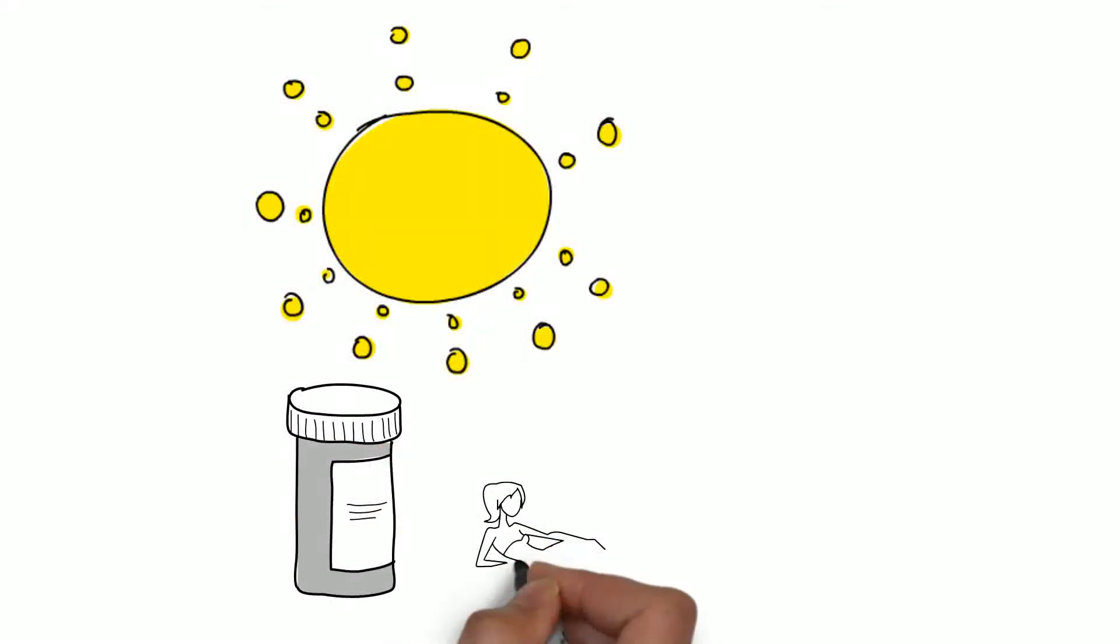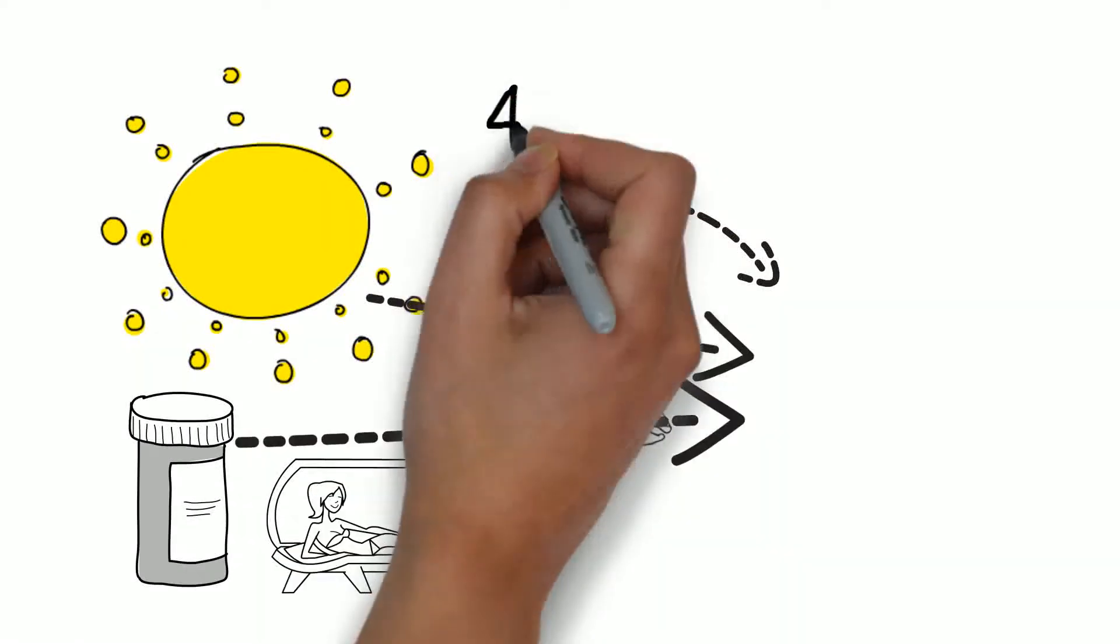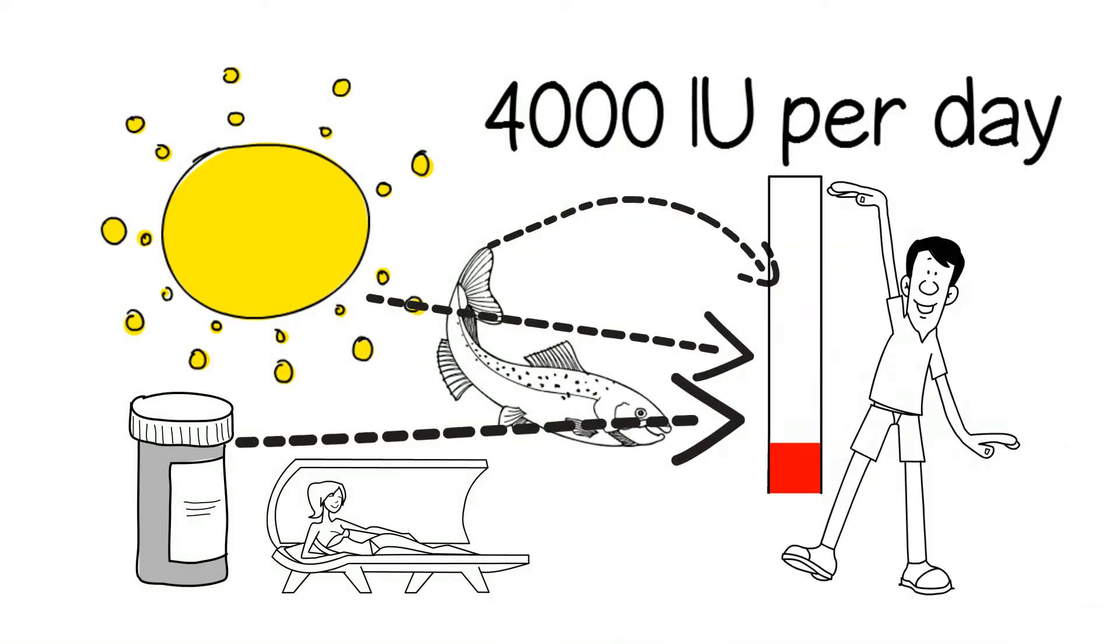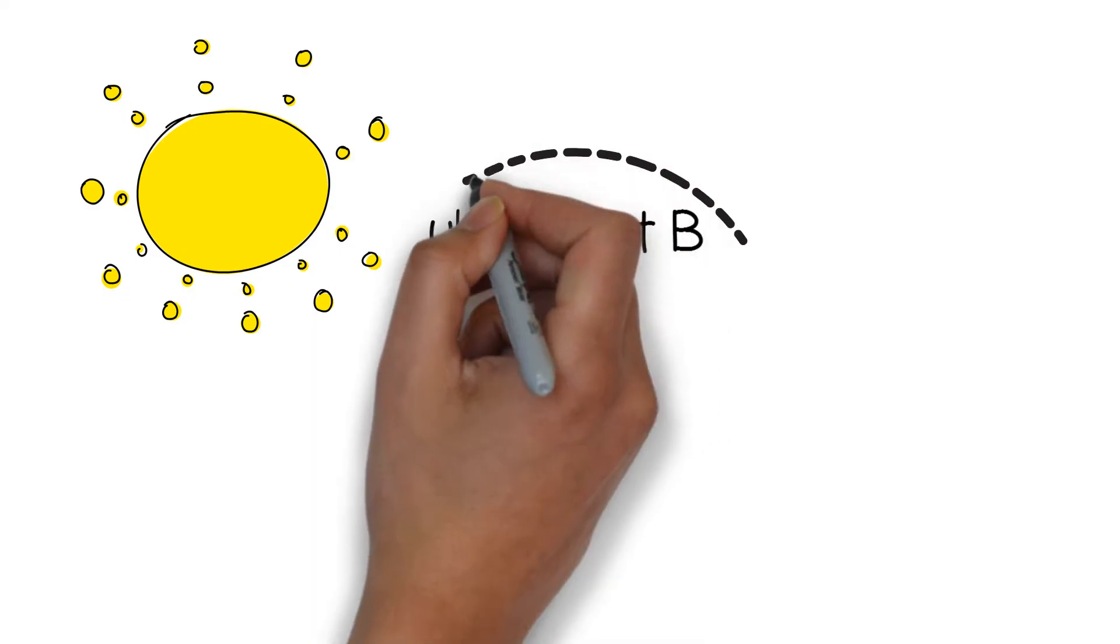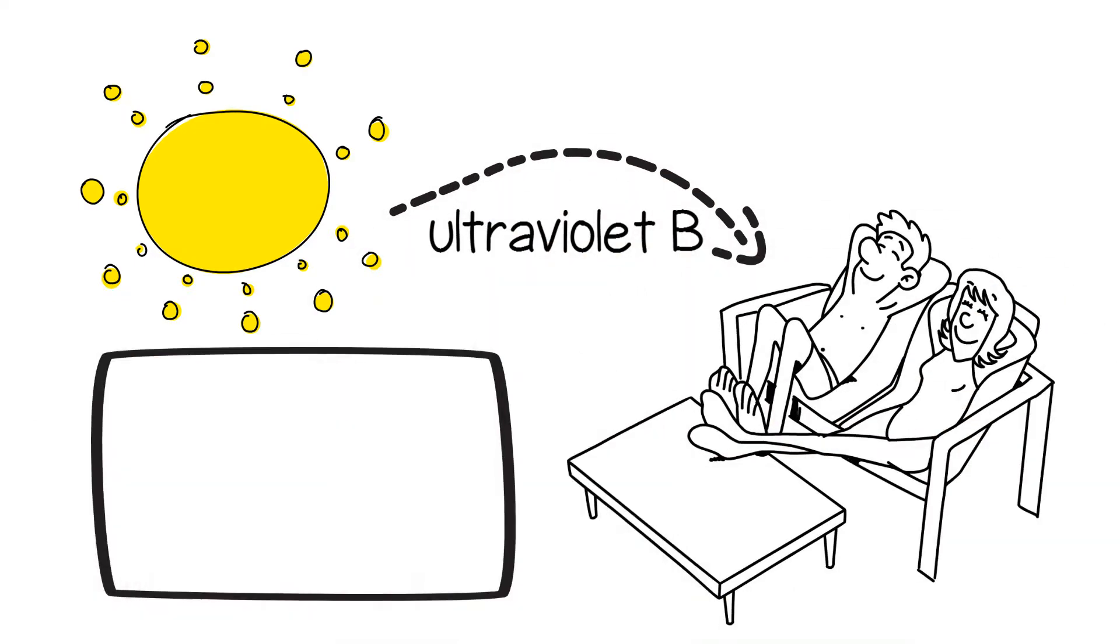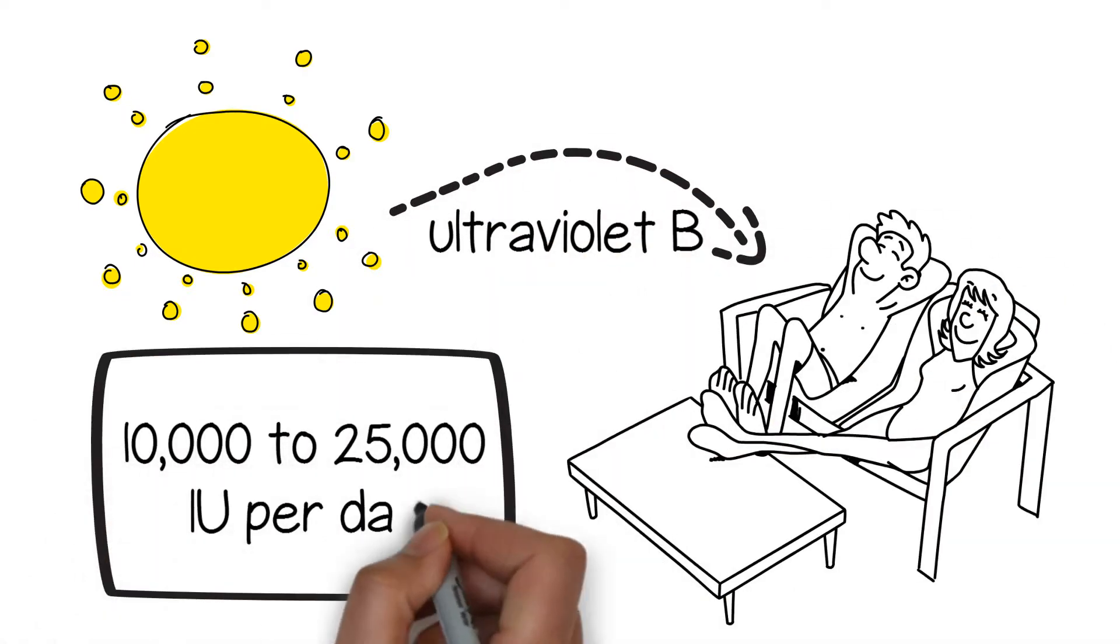An adult will need a vitamin D intake of approximately 4,000 IU per day to reach this level. Natural sun ultraviolet B exposure to your skin is best and can generate between 10,000 to 25,000 IU per day.